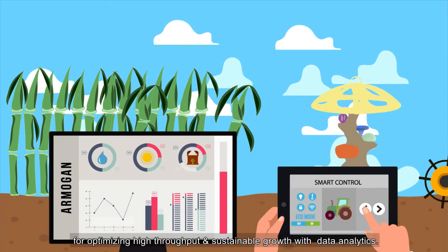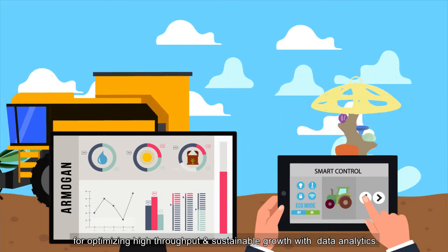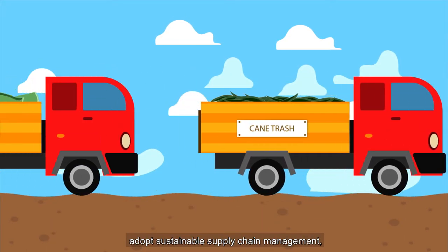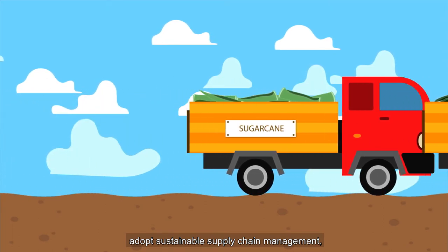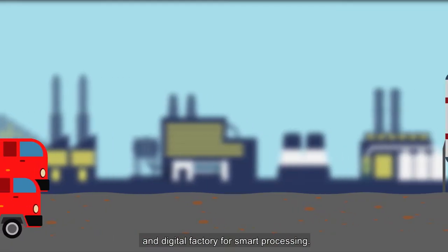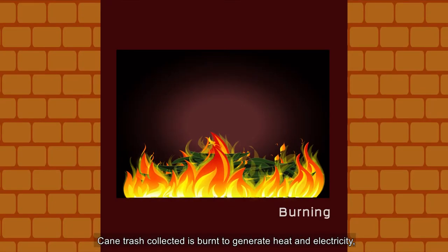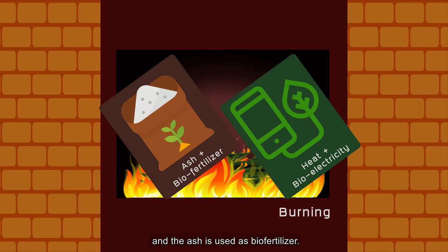optimizing high throughput and sustainable growth with data analytics. We use advanced robotics for harvesting, adopt sustainable supply chain management, and digital factory for smart processing. Cane trash collected is burned to generate heat and electricity, and the ash is